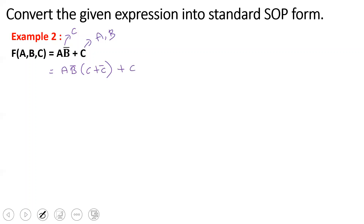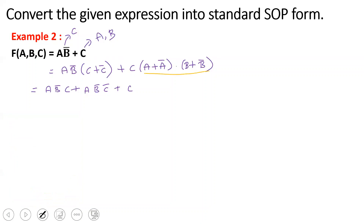For the term C, two variables are missing. First, A is missing — that gives (A + Ā). Then B is missing — that gives (B + B̄). So for the two missing variables, we multiply by both (A + Ā) and (B + B̄). Now multiply and expand. The first term AB̄(C + C̄) gives AB̄C + AB̄C̄.